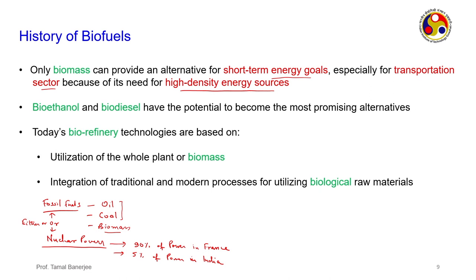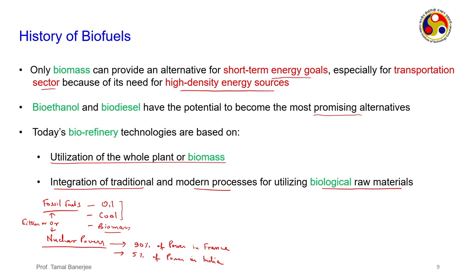Bioethanol and biodiesel have the potential to become the most promising alternatives. Today's biorefinery technology is based on utilization of the whole plant or integration of traditional and modern processes for utilizing biological raw materials. The overall schematic shows different raw materials — grain, lignocellulosic material, microalgae, and waste oil — going through different techniques including pretreatment methods, gasification, and pyrolysis.